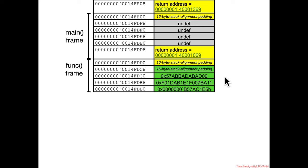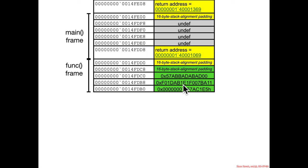And once again, you should have seen what I was expecting to see. You should see three variables filled in and there's still extra eight bytes in order to achieve 16-byte alignment, because Microsoft is essentially trying to allocate space in 16-byte chunks at a time, plus of course the return address padding.